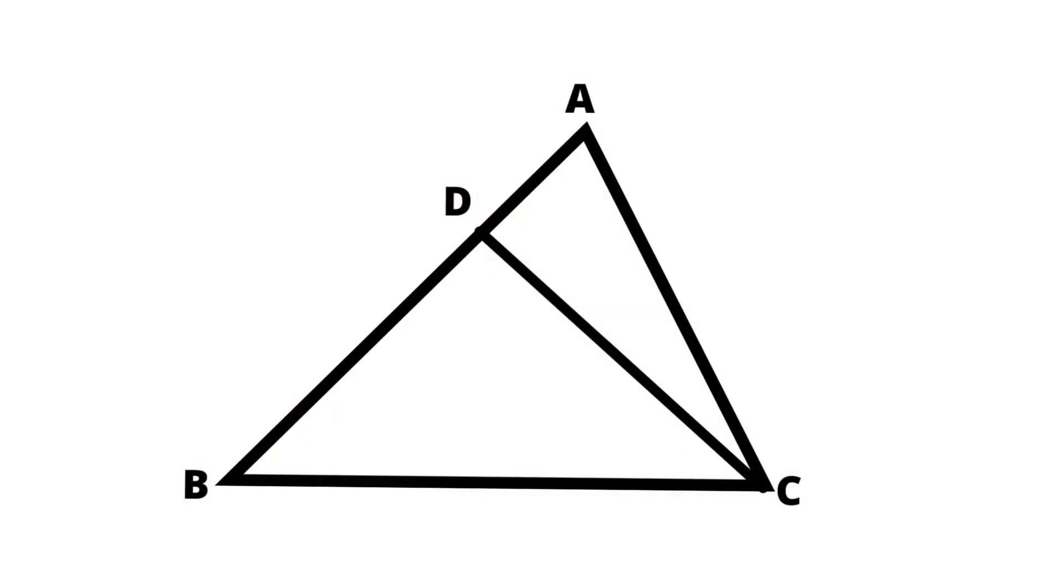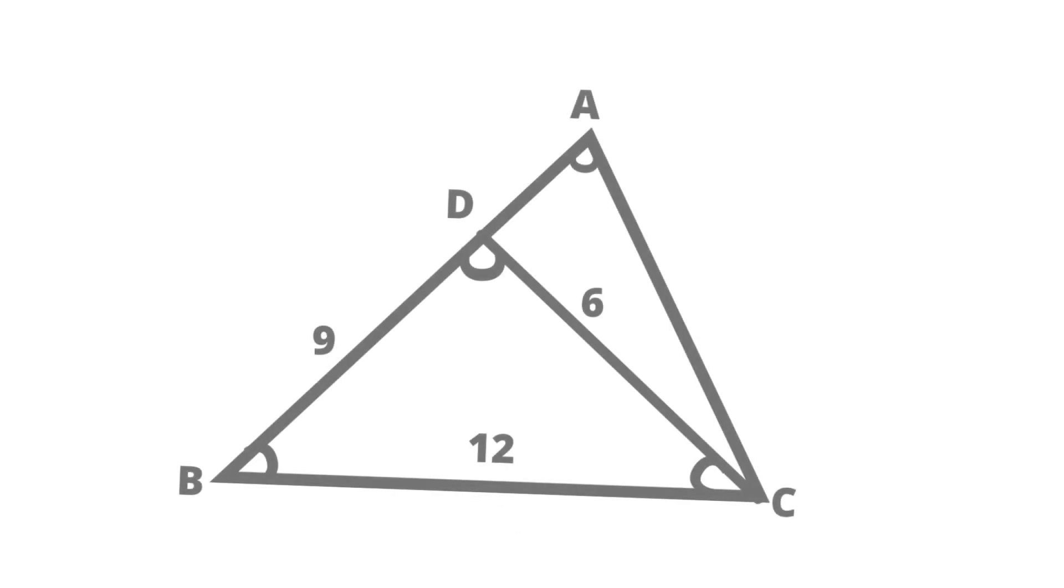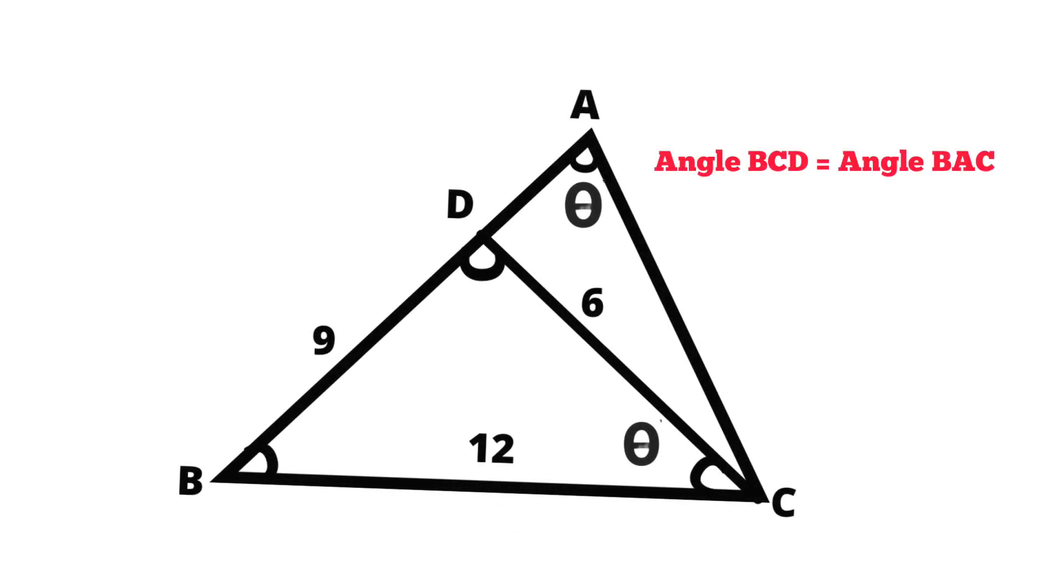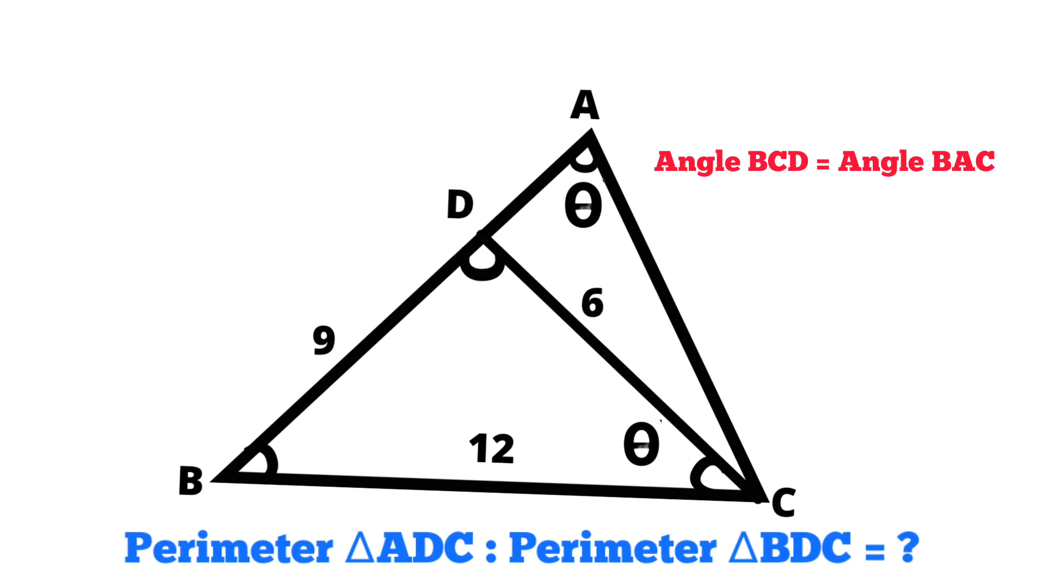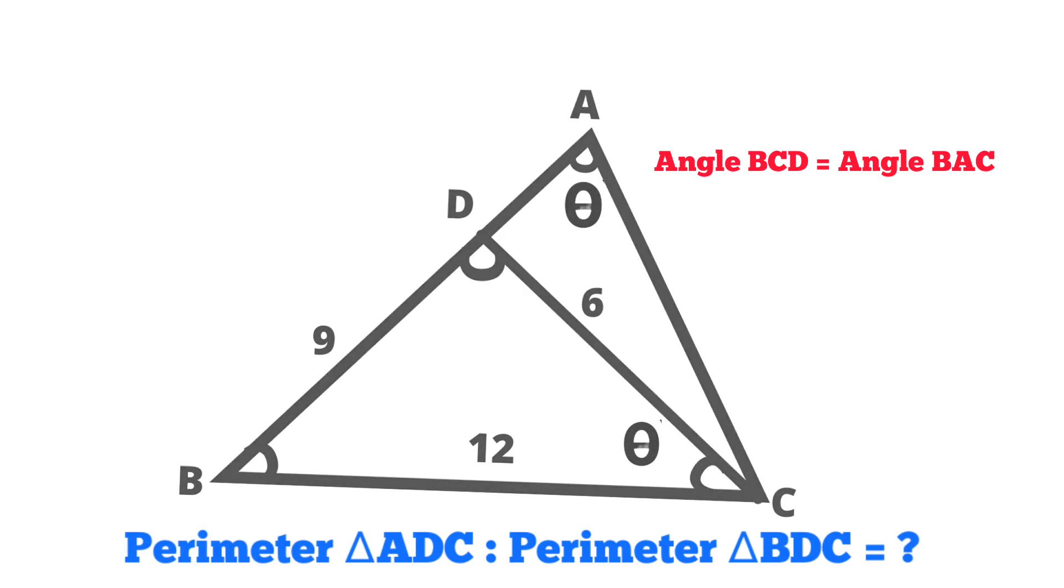In triangle ABC, BC equals 12 cm, DB equals 9 cm, CD equals 6 cm and angle BCD equals angle BAC. Then, what is the ratio of perimeter of triangle ADC to that of triangle BDC?